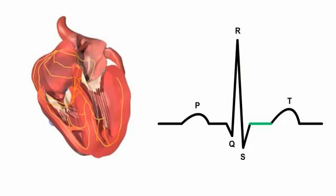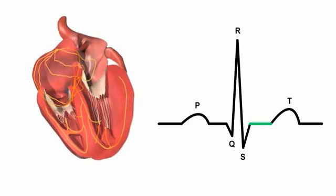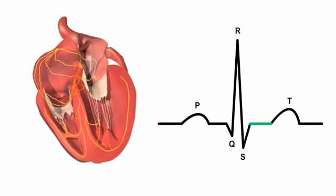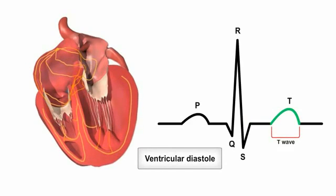Finally, as the signal passes out of the ventricles, the ventricular walls start to relax and recover, a state described as ventricular diastole. The dome-shaped T wave on the ECG marks this ventricular repolarization.